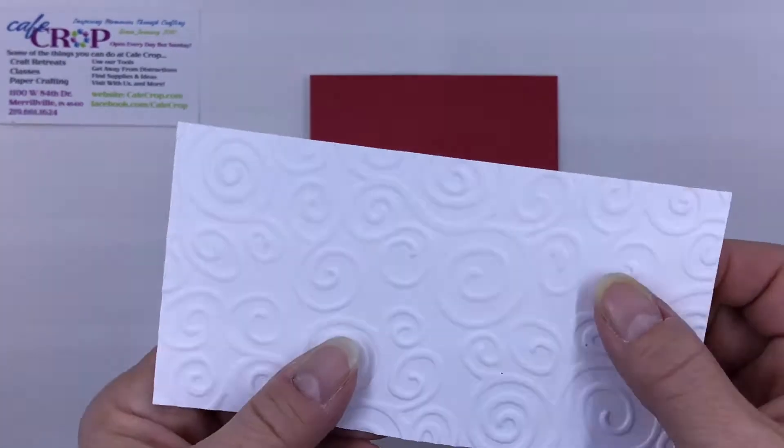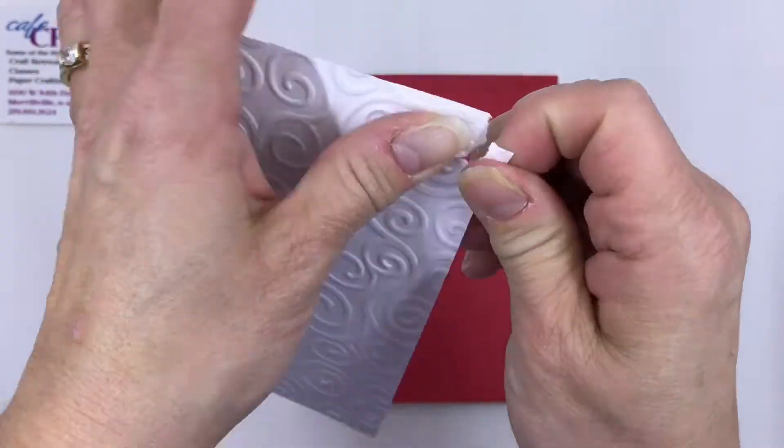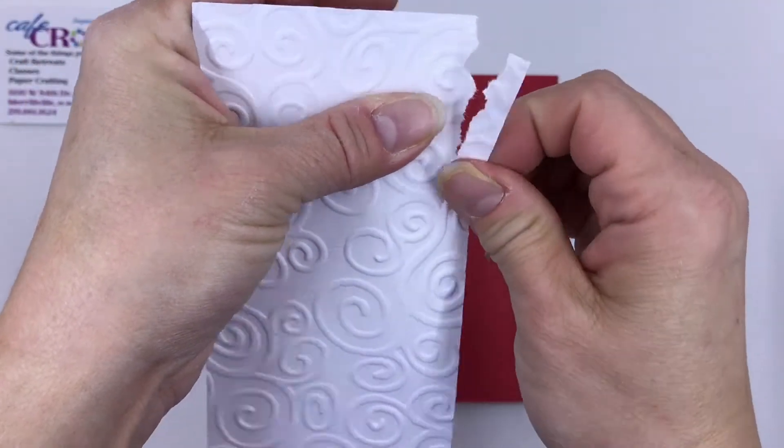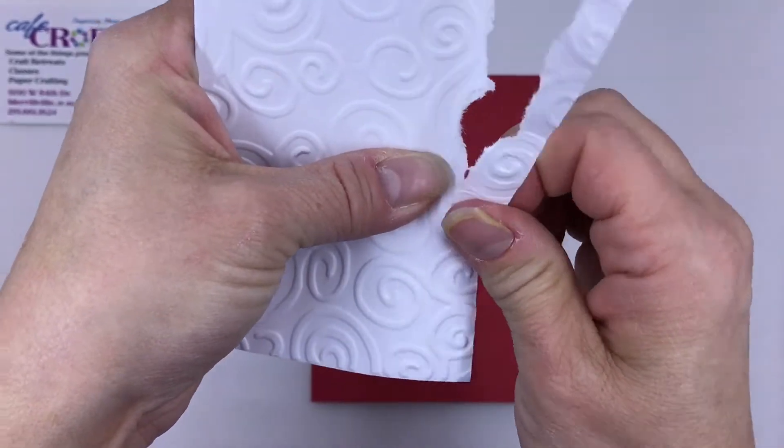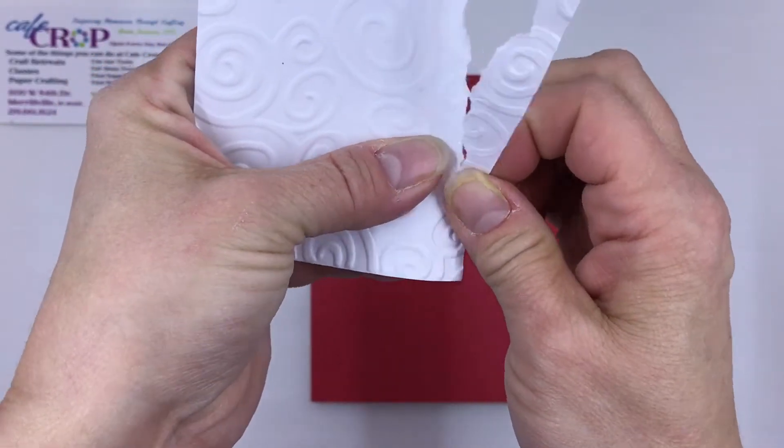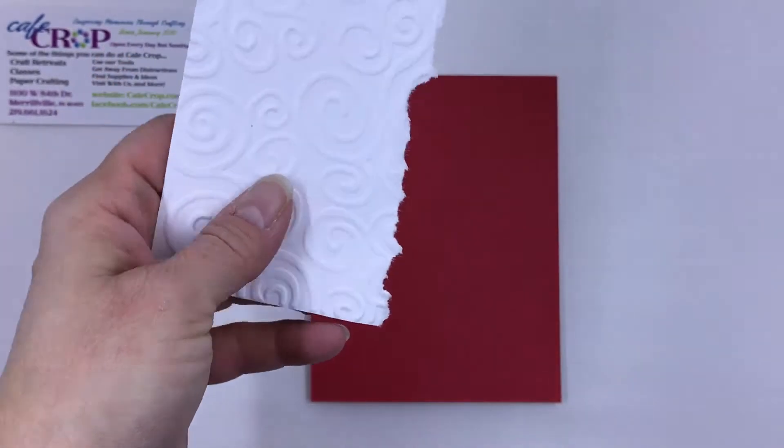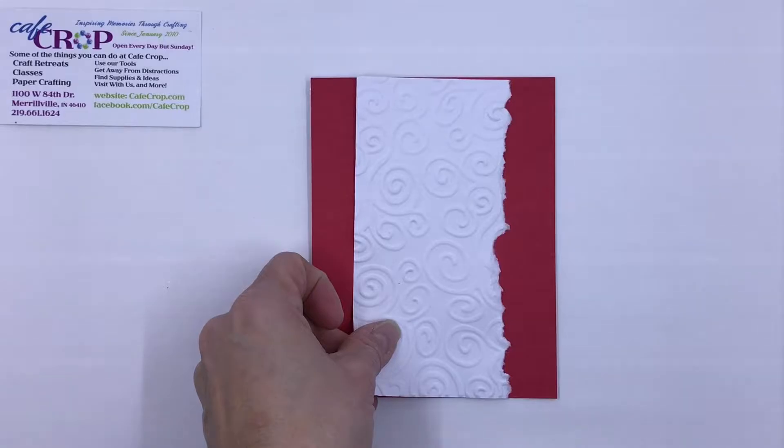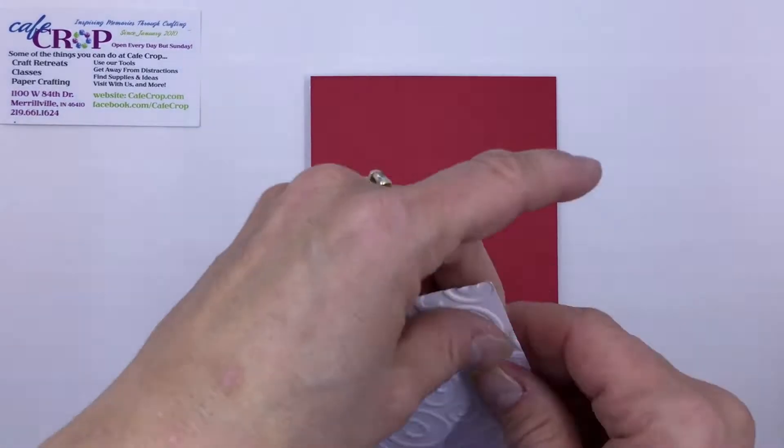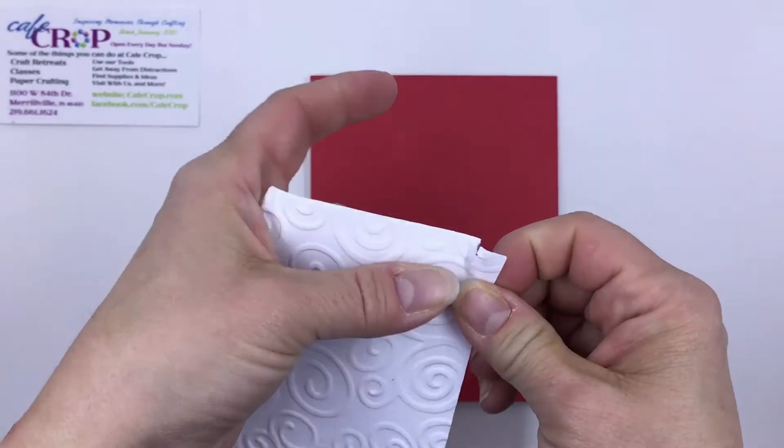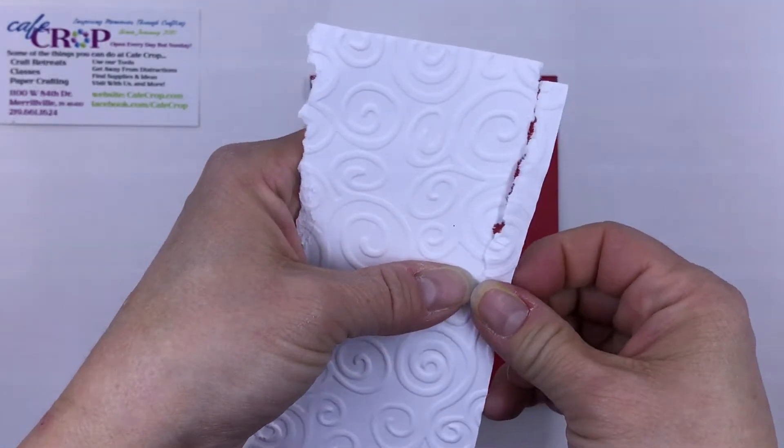And now we've got this nice embossed piece, and I'm going to take it and just tear my edges. So nothing fancy, but if I tear a little bit on one edge, then I can adjust my overall size when I get to the other side. This is going to go on the front of the card just like that, so I can decide how fuzzy I want that front of the card to be and then adjust as needed as I tear.